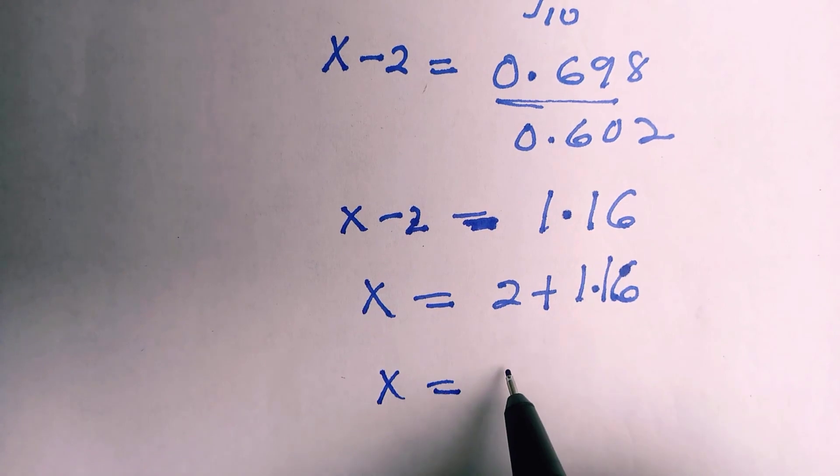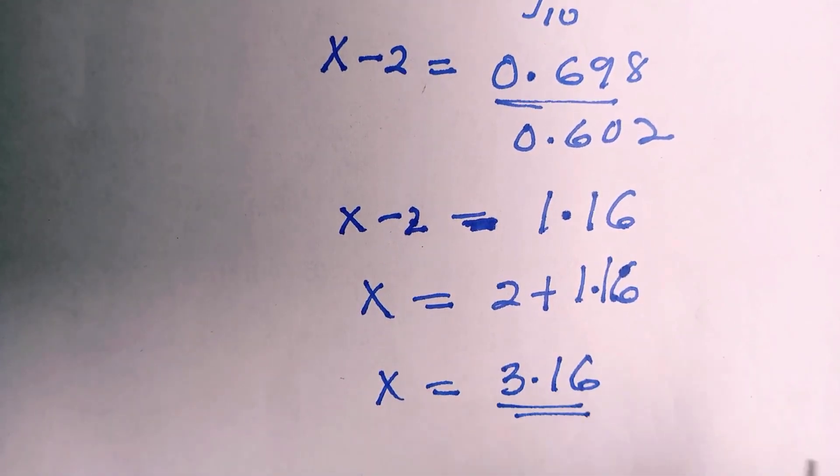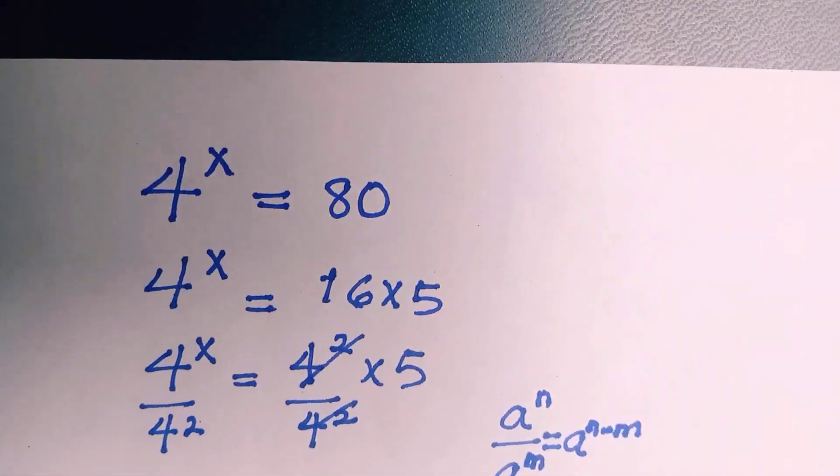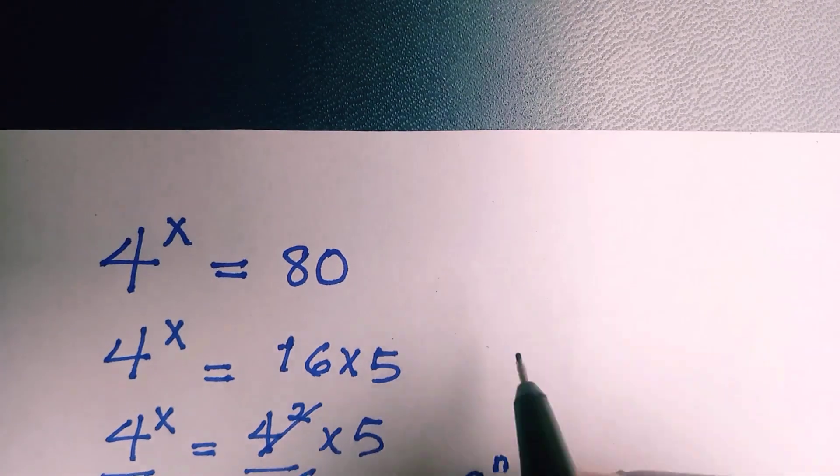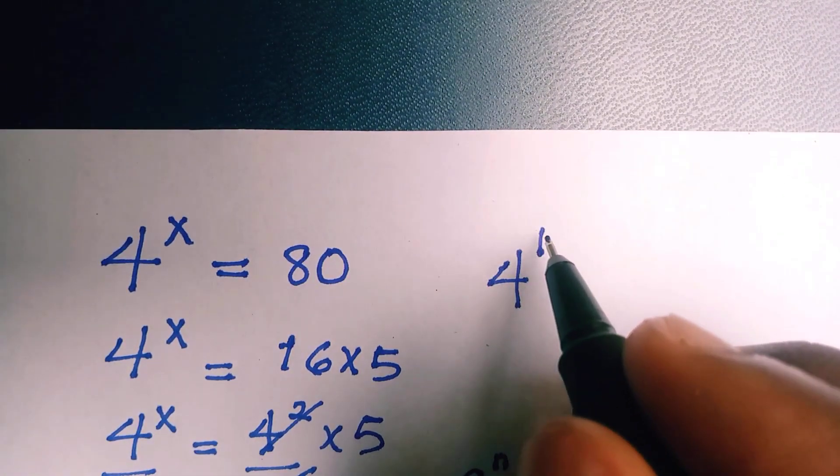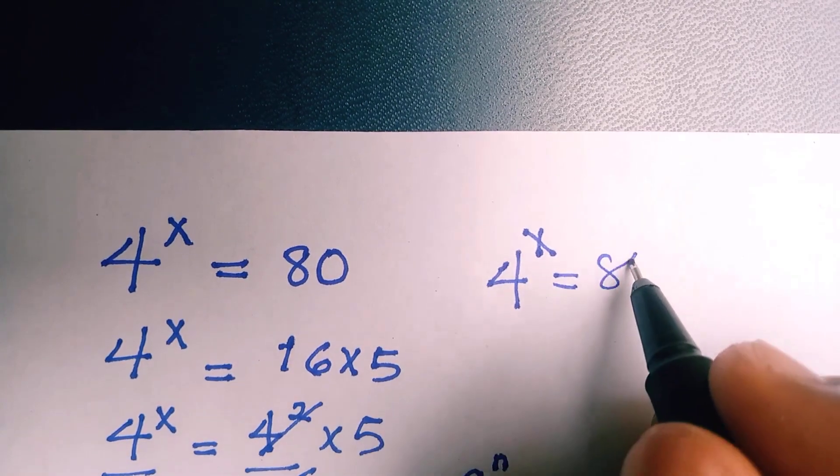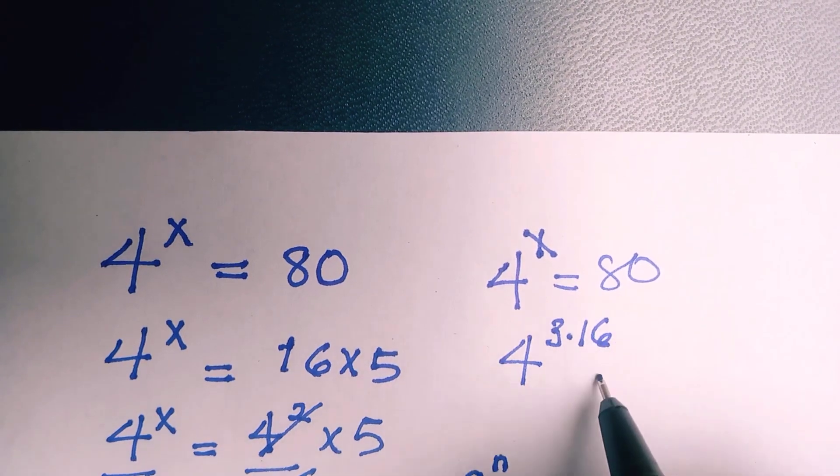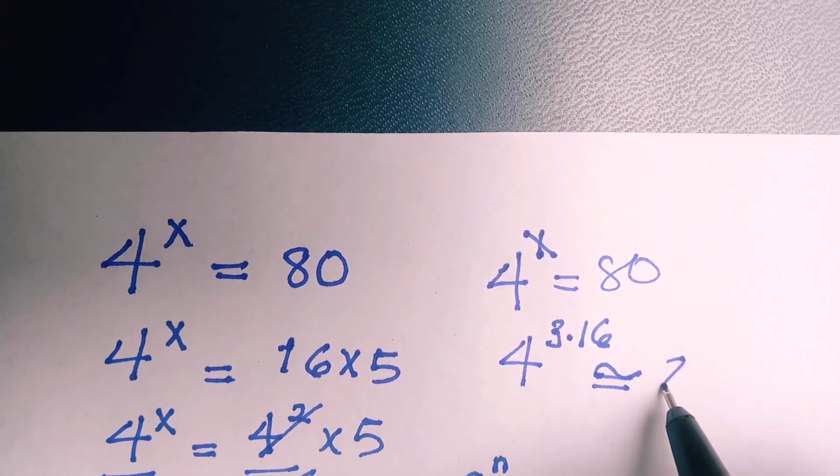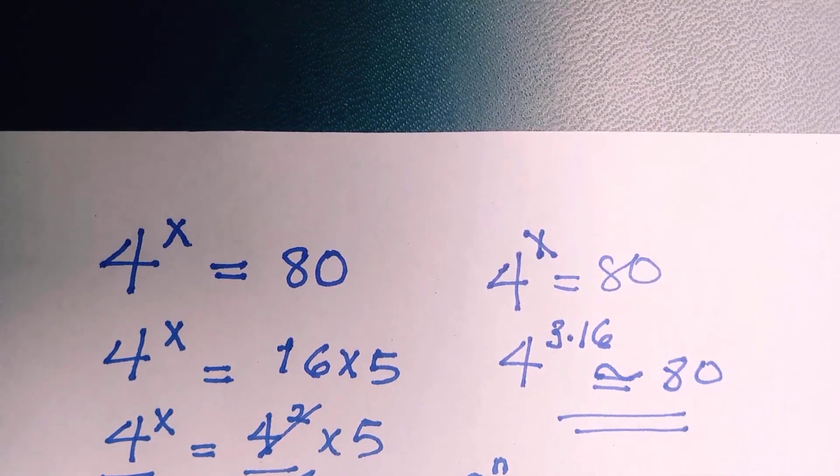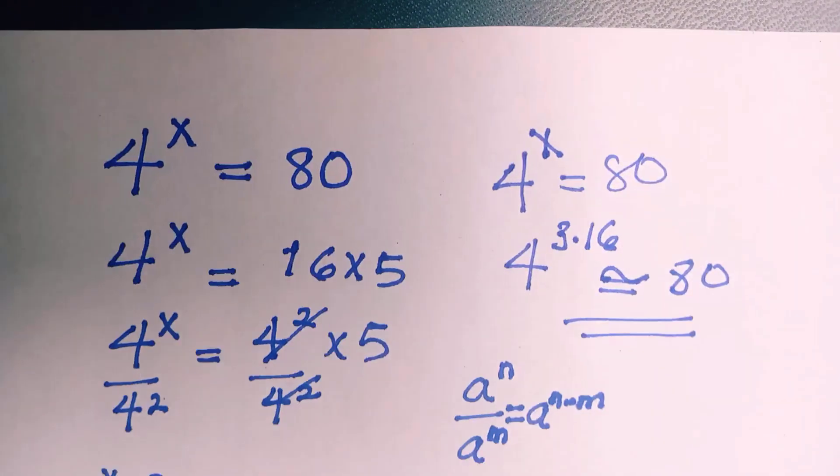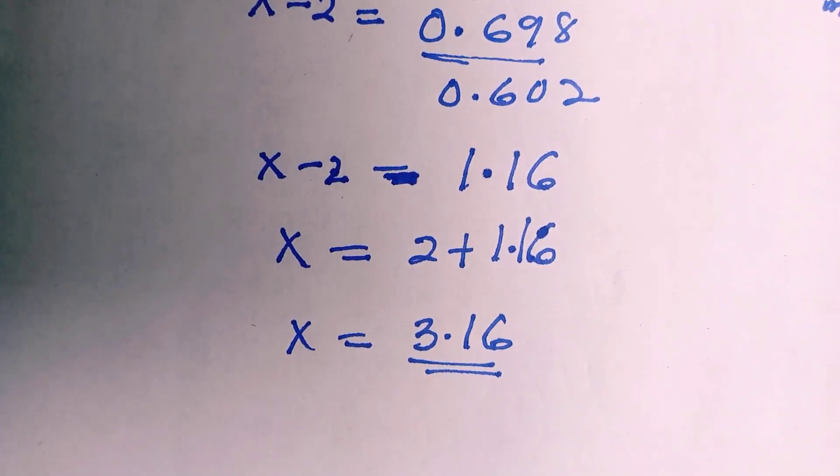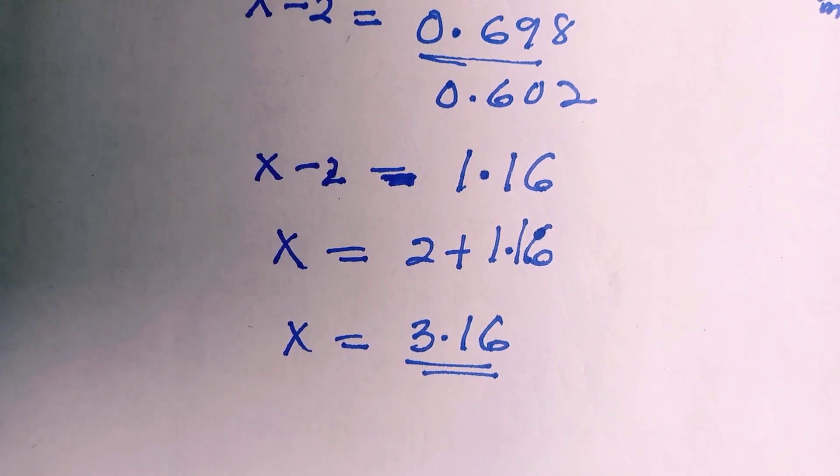So 3.16 satisfies this equation. Let's verify if 4 to the power x equals 80. Whenever x is 3.16, we are going to put it here and everything is approximately 80. So thanks for watching and this is the final answer. If you have a question like this, you apply this approach to solve it and it will work. And don't forget to subscribe to my YouTube channel. I will see you.